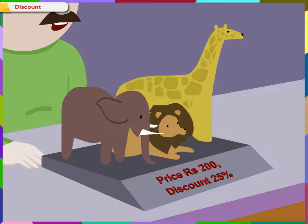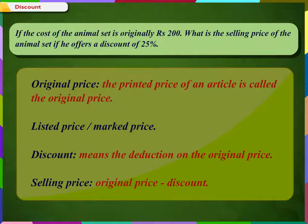Before solving this problem, we must know the meaning of some basic terms. Original price: the printed price of an article is called the original price. It is also sometimes called the listed price or the marked price. It is the price of the article before applying a discount on it.